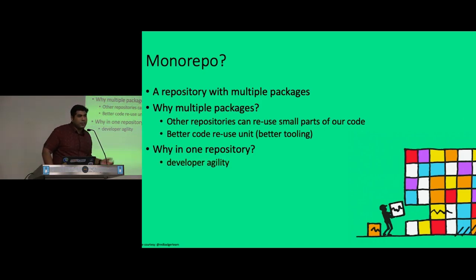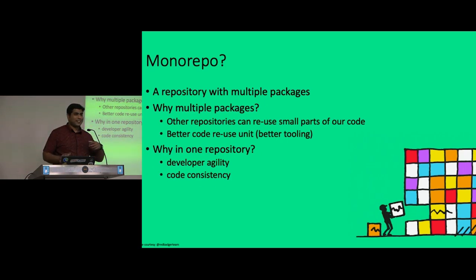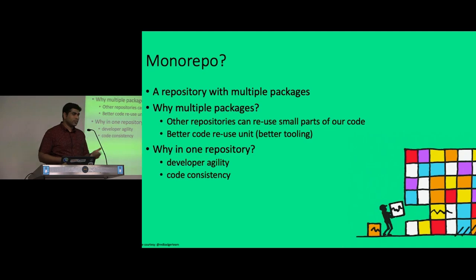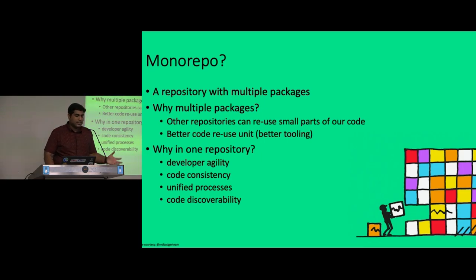Other reasons for putting everything in one repository include developer agility — you can move faster because you can reuse what others have written. You can maintain a lot of code consistency with the right linters and best practices, making it easy for any developer to figure out the code. You can also unify a lot of processes like build, deploy, code discoverability, CI/CD, and so on.